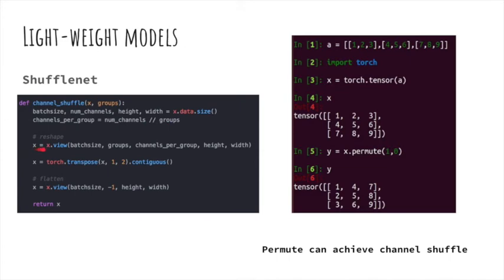And then the input is reshaped to batch size, groups, channels per group, height and width. And then the first and second dimension is exchanged. That means the group and the channel per groups are exchanged. And then it reshaped to BCHW again.